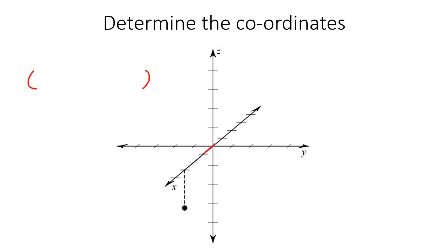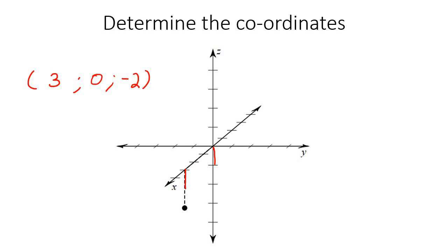Here's our last example. For X, we've gone one, two, three. For Y, we have not gone left or right, so that would be zero — don't leave it blank. For Z, it's gone about one, two — it's about two of those distances, definitely not three. It went two down, so you'd say negative two. It might look like it lines up with three, but that's three dimensions being weird. You could use a straight edge to measure that length, and you'd see it's exactly the same unit distance repeated twice.